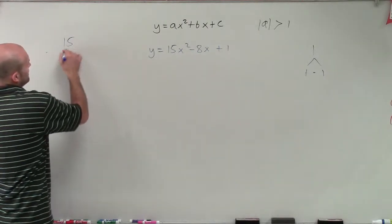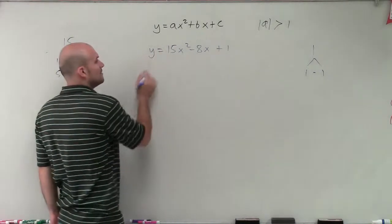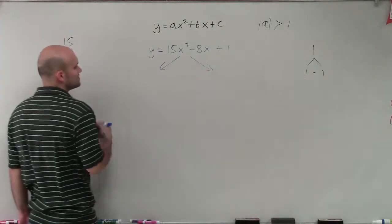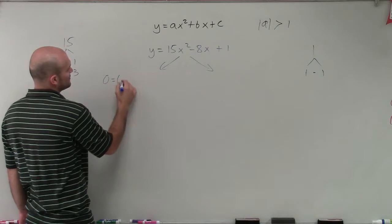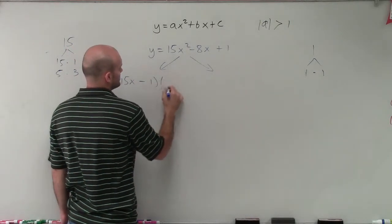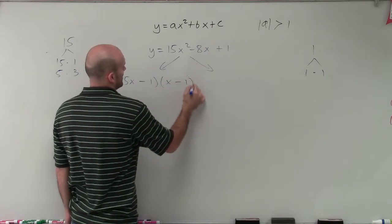So our 15, we have a couple options. We can do 15 times 1 or 5 times 3. So remember, we're solving this. So we're going to set up our two equations into setting them equal to 0. So my first one, I could have 15x minus 1 times x minus 1.